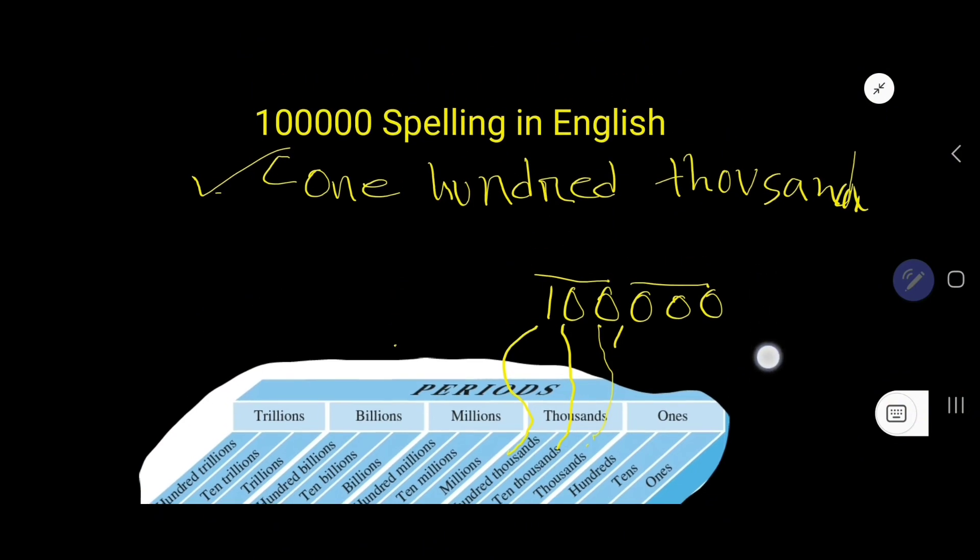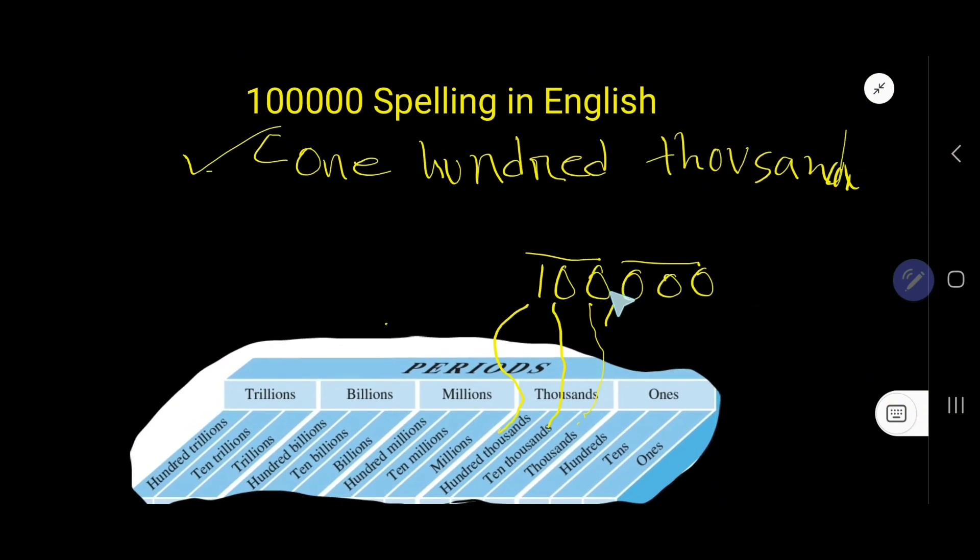In case of writing or saying a number, you have to place the name of the period after the number. Here, the number is 100, and period name is thousand. So, one hundred thousand.